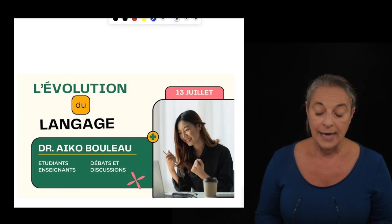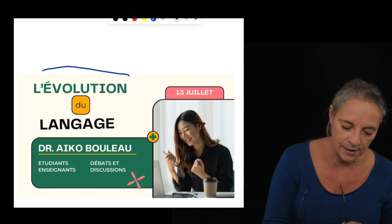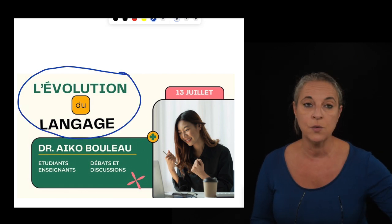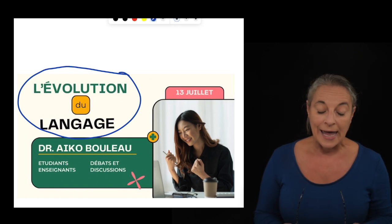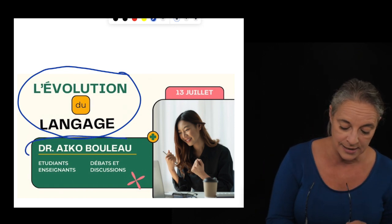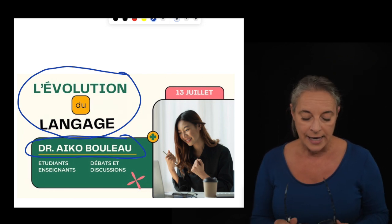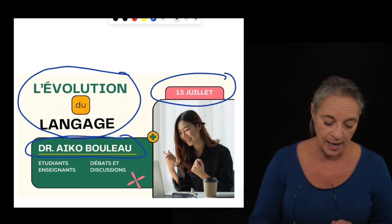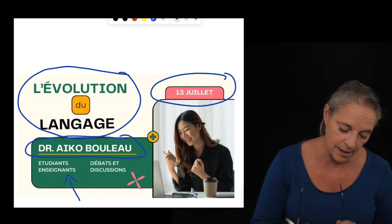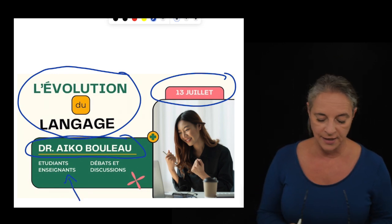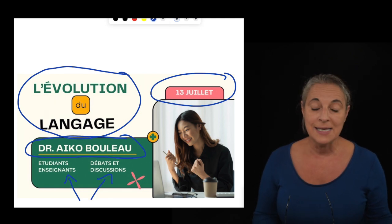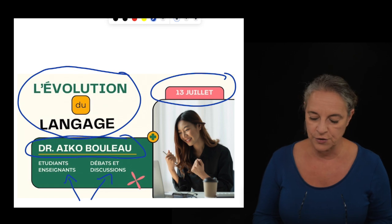Une invitation à une exposition. In this poster, we do not have the word invitation, peut-être. Un poster pour une conférence. Now let's have a look at it again. It looks like it's a conference. It looks like that's the title of the conference, l'évolution du langage. It looks like it's being held by a professor, Dr. Aiko Boulot. It looks like it's being held on the 13th of July.